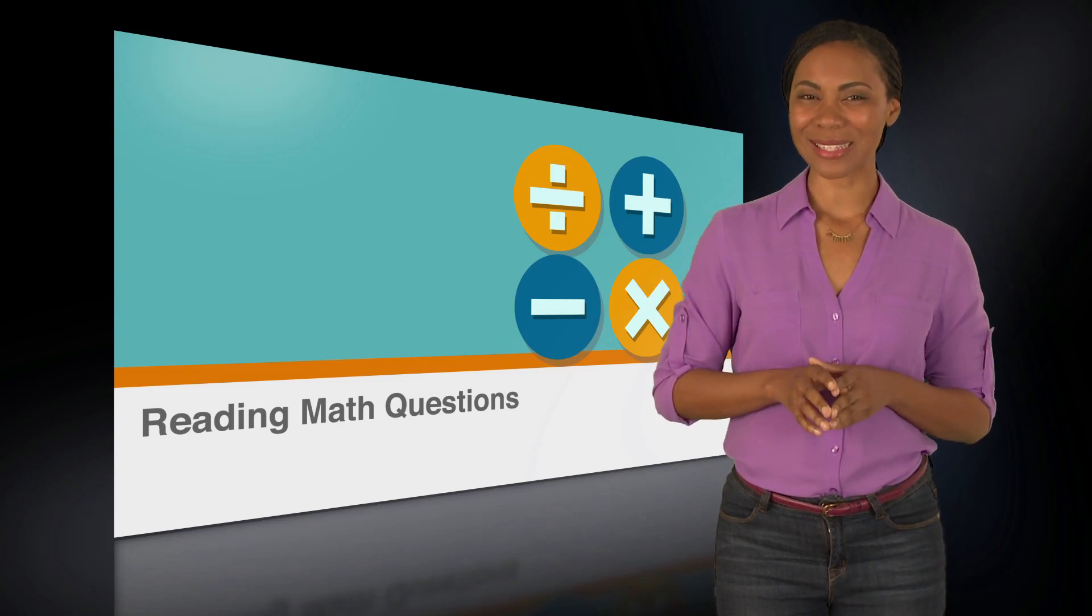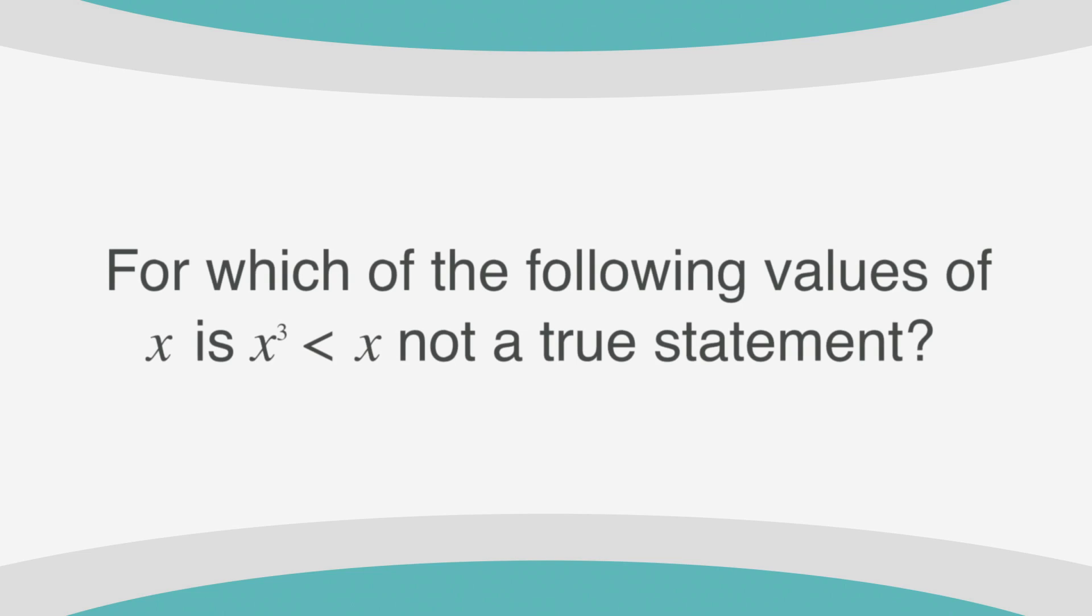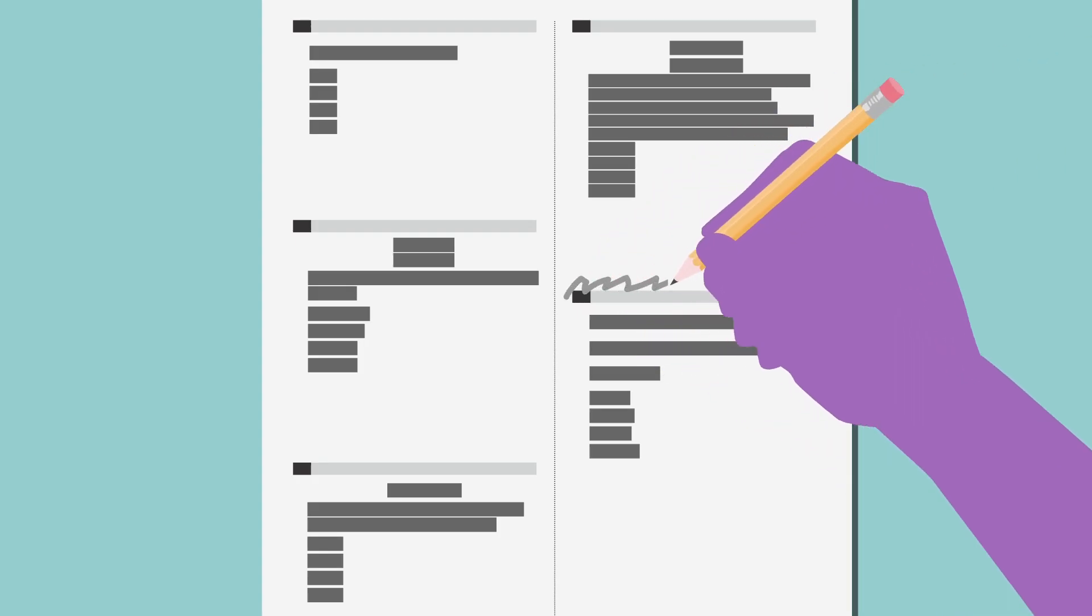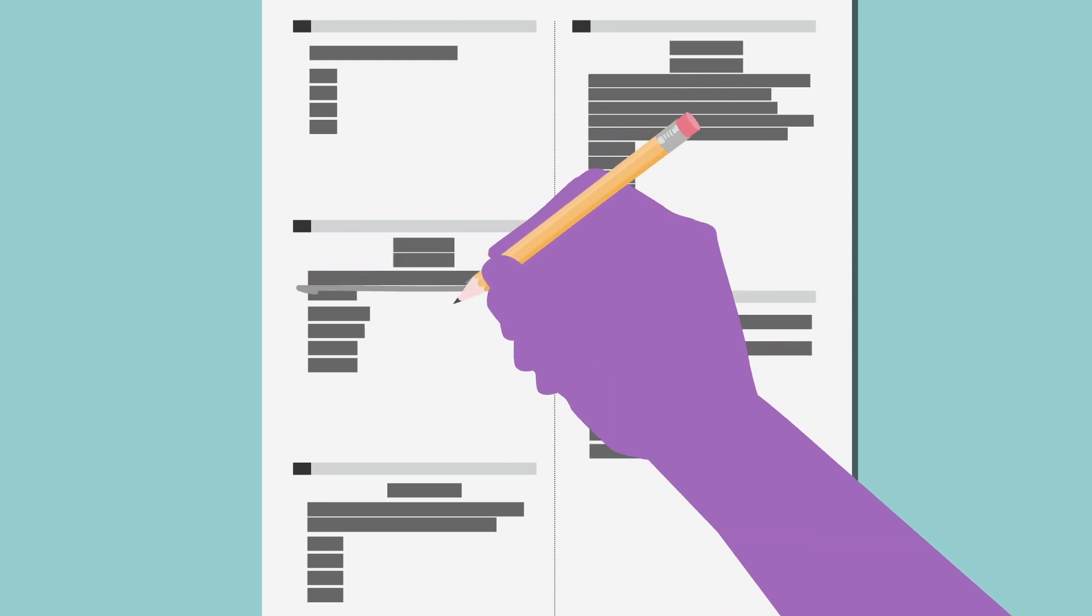Let's look at an example. For which of the following values of X is X cubed less than X not a true statement? The word not is practically hiding in there. So, before you even look at the answers, circle or draw a symbol around not to make it stand out. The markings you make on the test booklet will be especially helpful when you're checking your answers at the end of the section, given you have time.